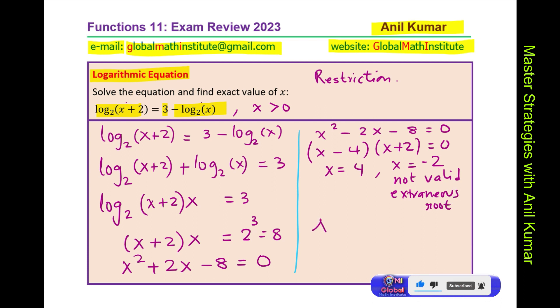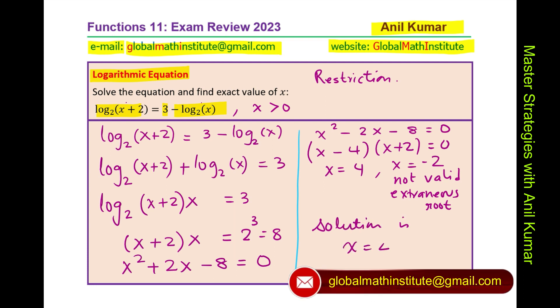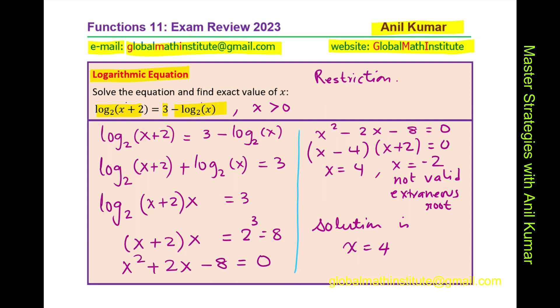So the only solution is x equals 4, correct? Is that clear? That is how we are going to solve this particular equation. I hope the concept is absolutely clear.